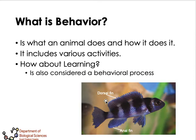Animals perform necessary activities needed for their growth, development, and survival. Learning is considered a behavioral process — during the course of evolution or development of a specific behavior, there is a learning process involved. These learning processes are passed on from one generation to another, which is why learning as a behavioral process links behavioral ecology to natural selection and evolution.